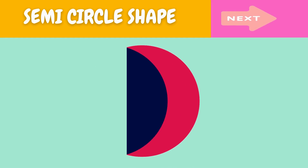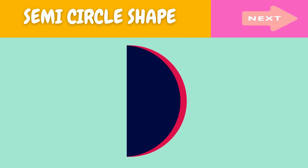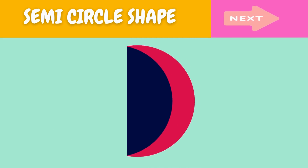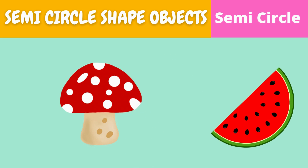This is a semicircle. What is this? This is a semicircle. Here are some examples of semicircle shaped objects.